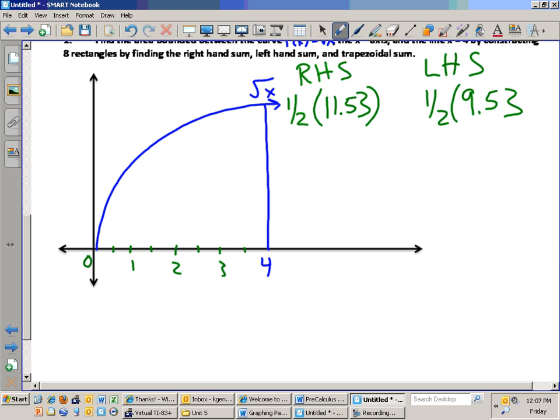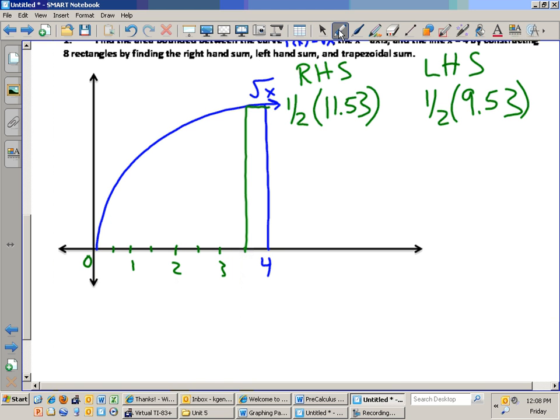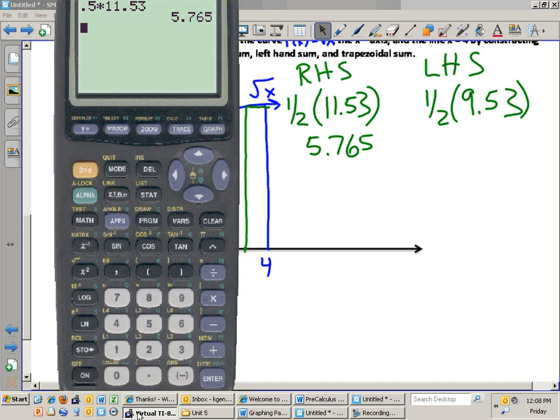As we draw this very last rectangle here, I will be looking at the left side of it to evaluate the height. I'm not going all the way up to 4. I'm going at the height at 3.5. Exactly. So now I can figure out both of these sums by going 0.5 times 11.53, I get 5.765. The left-hand sum will be 0.5 times 9.53, and I get 4.765.